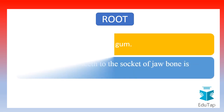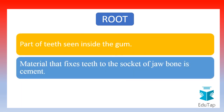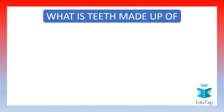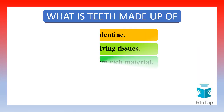The root is that part of the teeth which is seen inside the gum. The material that fixes the teeth to the socket of the jaw bone is called cement.